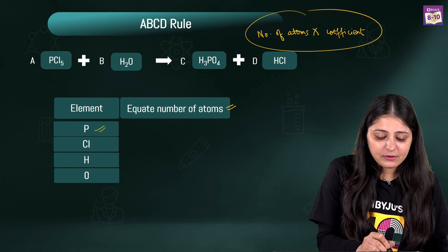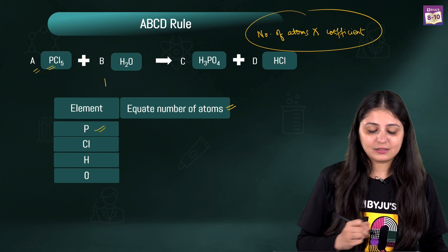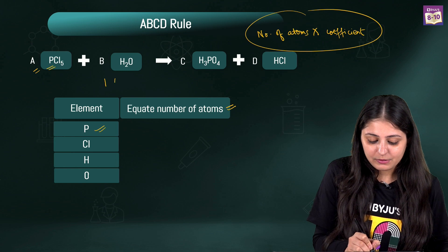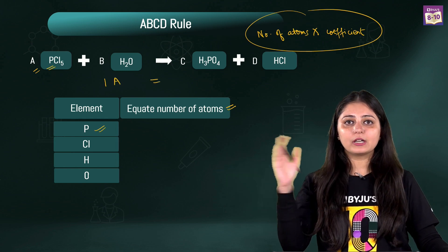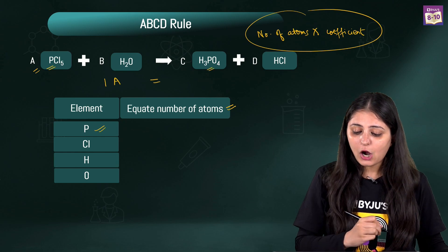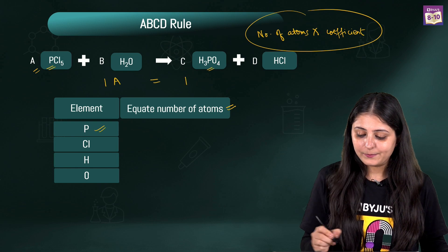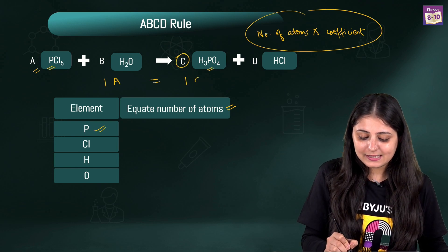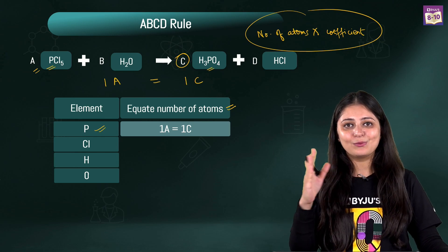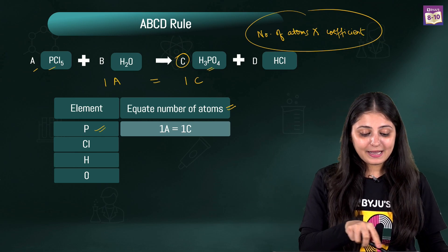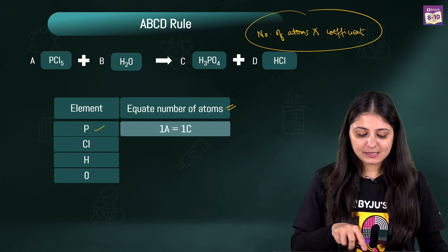On the reactant side, the number of phosphorus atoms is 1 and the coefficient is A, so I'm writing 1A. On the product side, there is 1 phosphorus atom with coefficient C, so we get 1A = 1C. That is our first equation.